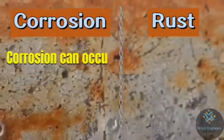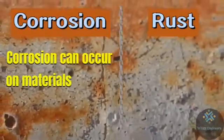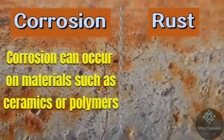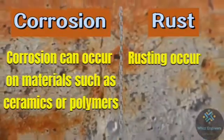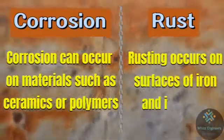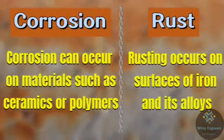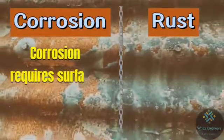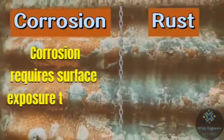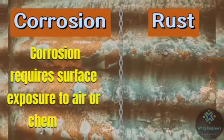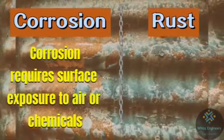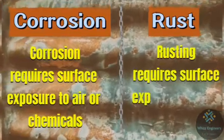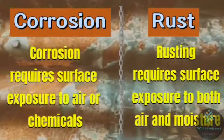Corrosion can occur on materials such as ceramics or polymers, whereas rusting occurs on the surface of iron and its alloys. Corrosion requires surface exposure to air or chemicals, while rusting requires surface exposure to both air and moisture.